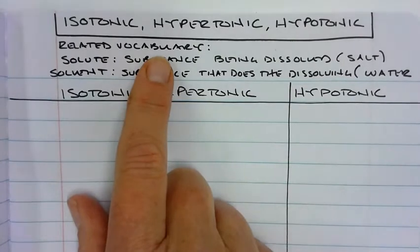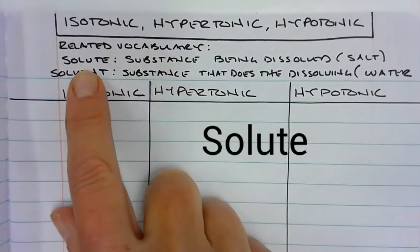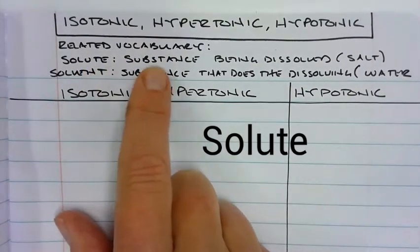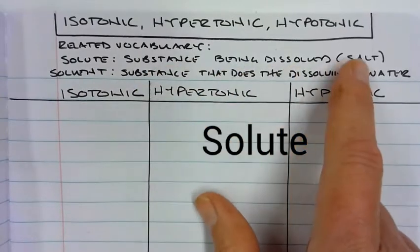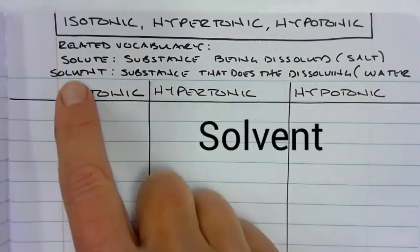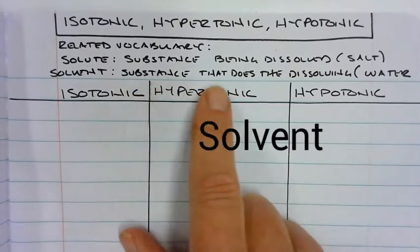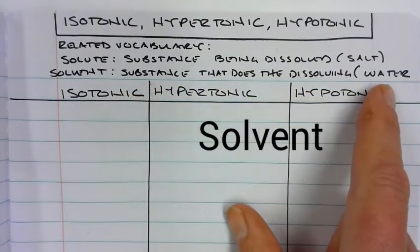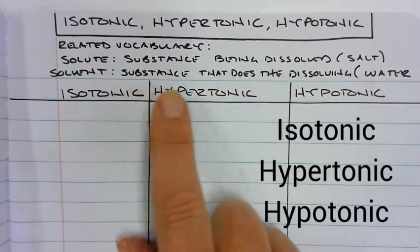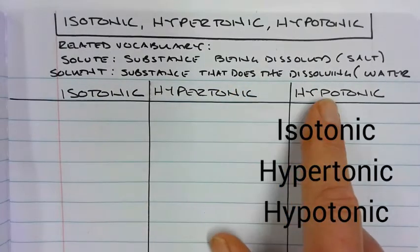Also I have some related vocabulary at the top. One term is called solute, which is a substance being dissolved, such as salt, and a solvent, which is a substance that does the dissolving, such as water. And then I have isotonic, hypertonic, hypotonic.